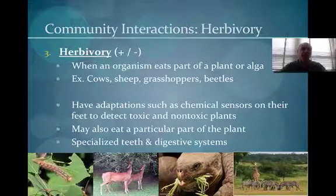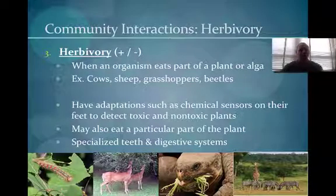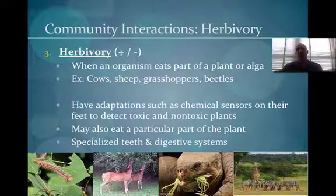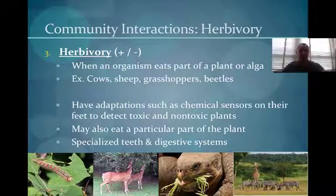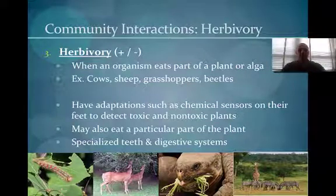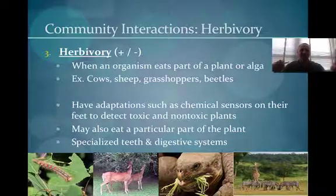Next is herbivory, which is positive for the herbivore and negative for the plant. Herbivory is when any organism eats any part of a plant or algae — like a cow, grasshopper, beetle, or sheep. Herbivores have special adaptations: specialized teeth, a longer specialized digestive system, and they may eat only particular parts of a plant. Insects like beetles or grasshoppers may even have receptors on their feet that recognize toxic versus non-toxic plants, so they avoid eating toxic ones.